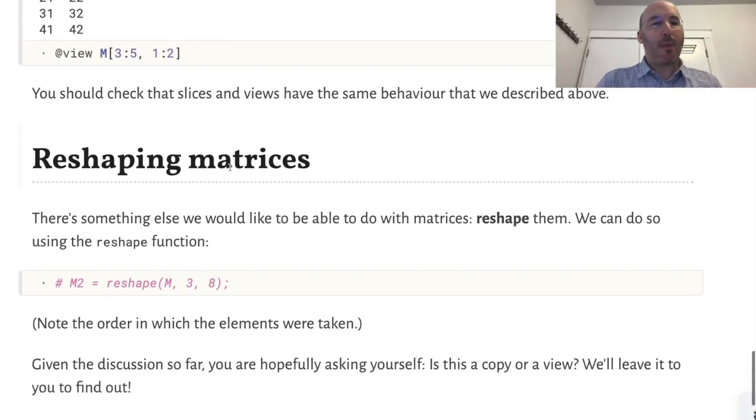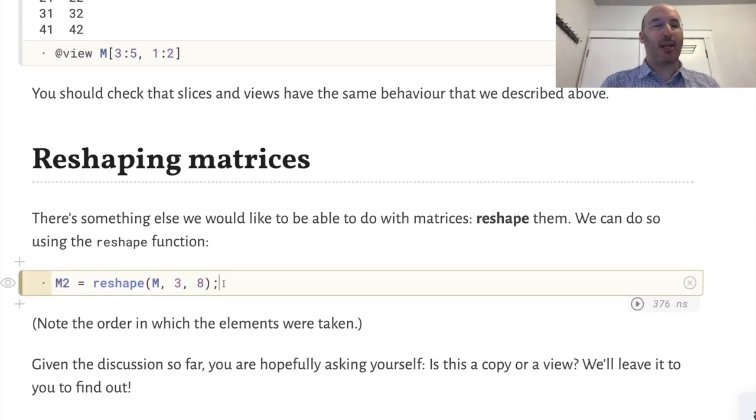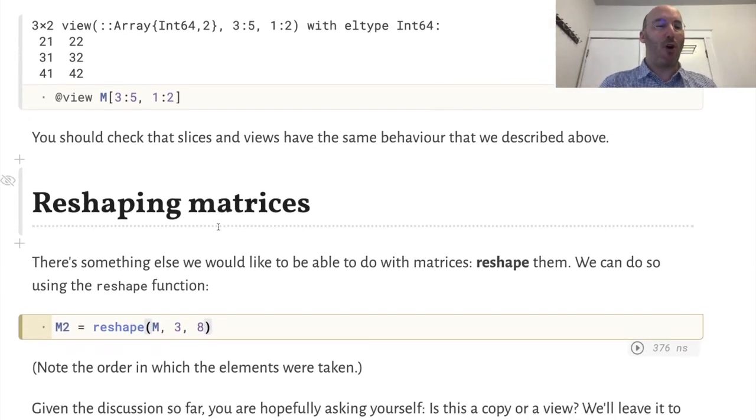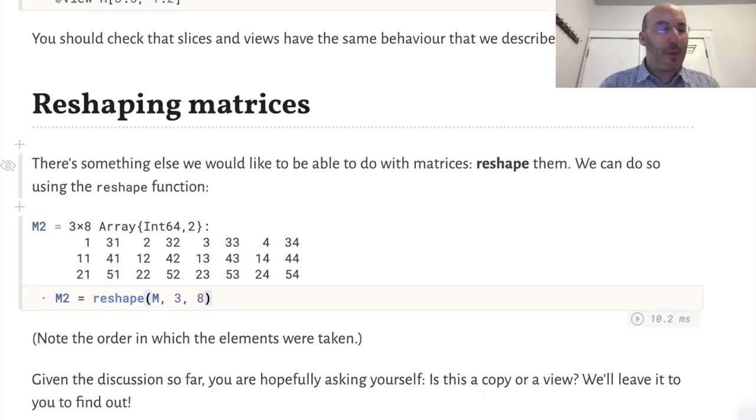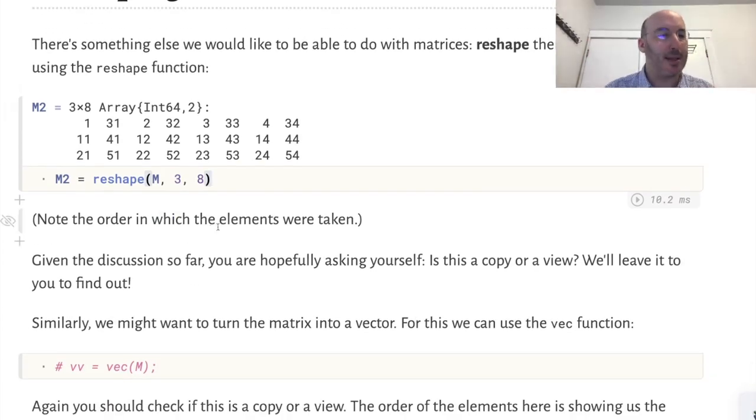If we have a matrix, we can reshape it. This matrix was size 6 by 4. Let's reshape it to size 3 by 8, which has the same number of elements, just thinking of it in a different way. Given what we've seen, you should be wondering, is it making a copy of all this data or is it a view into the original array? That's for you to explore, an exercise for the reader.